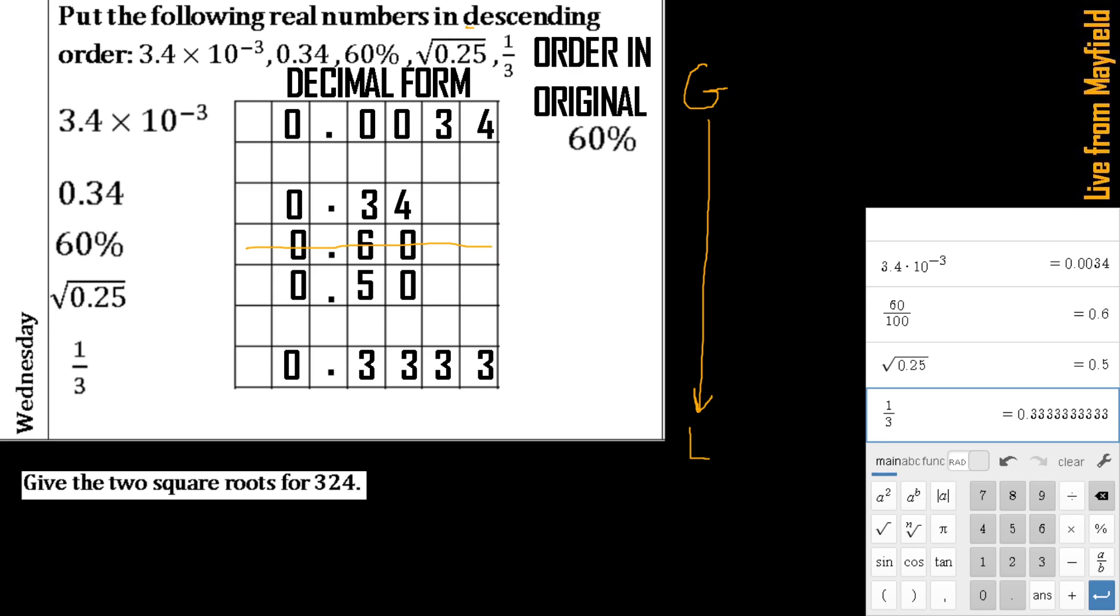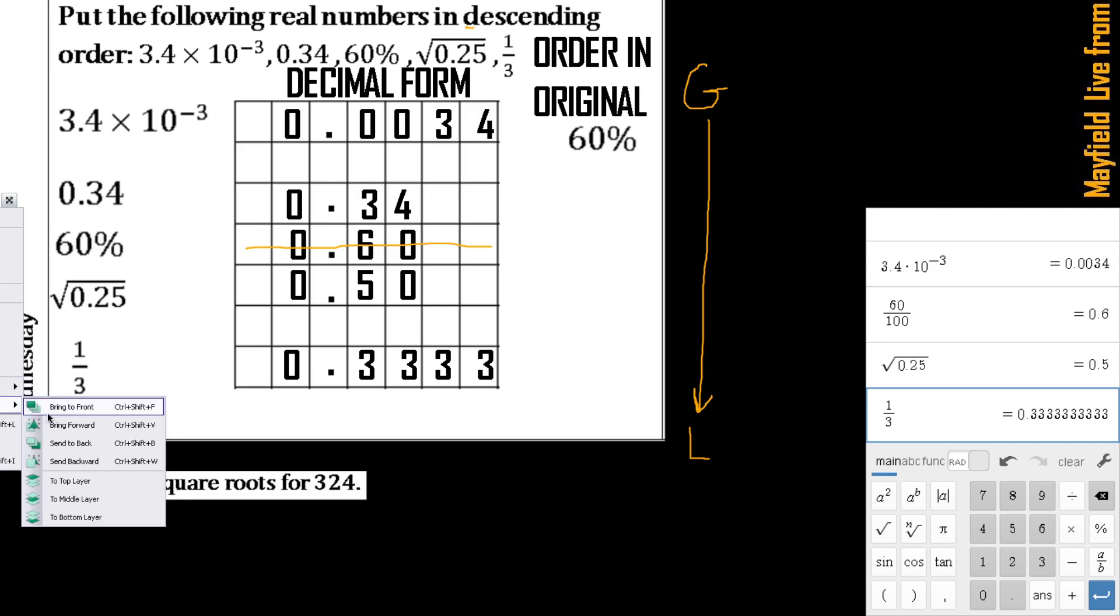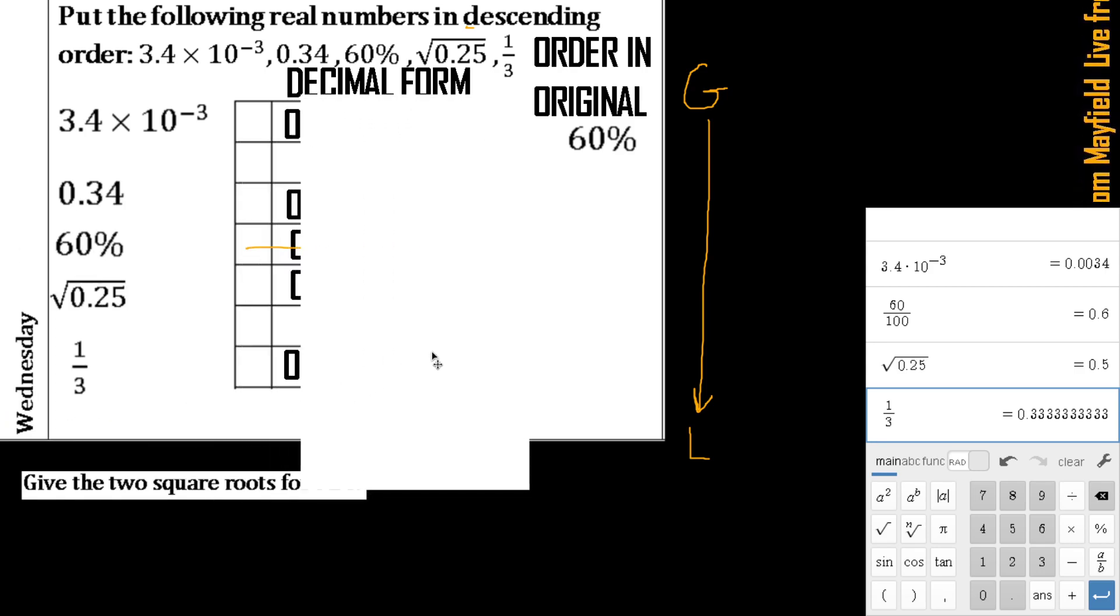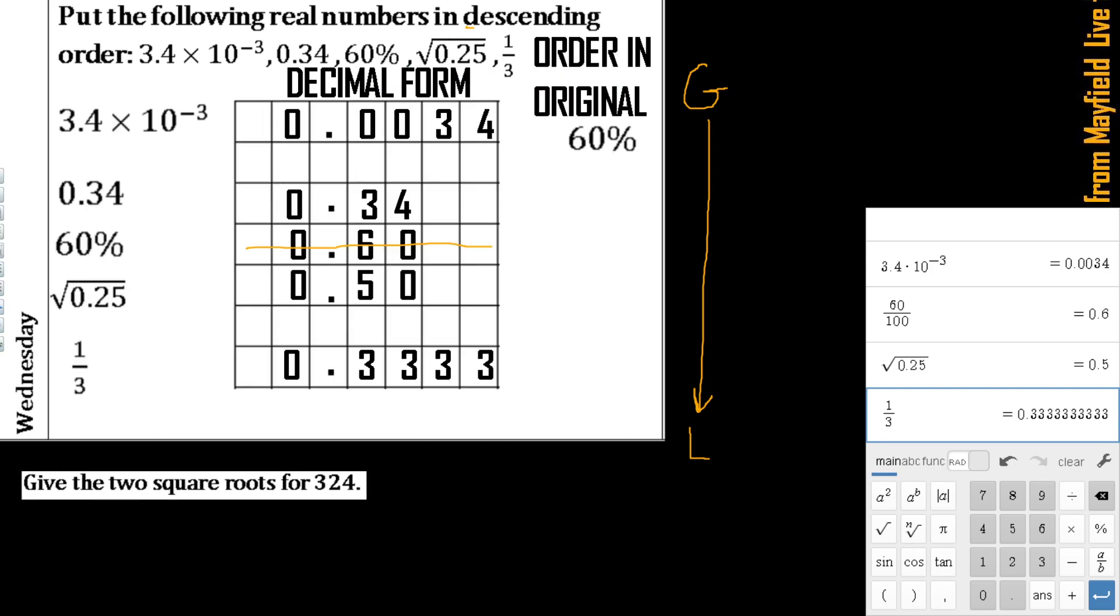Now what do we have next? Same idea - cover it up. Those are tied on the far left, so we go to the next one. Which value is the largest? We see that that 0.5 is the largest, which in original form is that square root of 0.25. So we're going to say that's going to be our next one. Make one line through it.